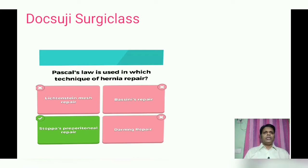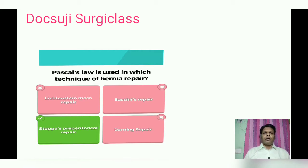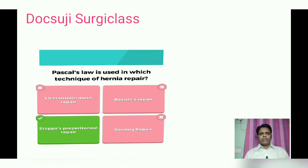Pascal's law is used in which technique of hernia repair? Options are: Lichtenstein mesh repair, Bassini repair, Stoppa preperitoneal repair, and Darning repair. The answer for this question is Stoppa preperitoneal repair.